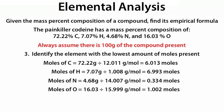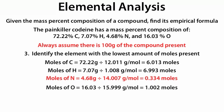Step 3: identify the element with the lowest amount of moles present. We have 6.013 moles of carbon, 6.993 moles of hydrogen, 0.334 moles of nitrogen, and 1.002 moles of oxygen. The lowest number is 0.334 moles of nitrogen.